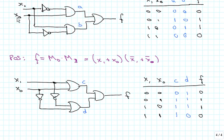The difference between the two forms is: in the product of sums form we have OR gates first and then an AND gate, whereas in the sum of products form we have AND gates first and then an OR gate.